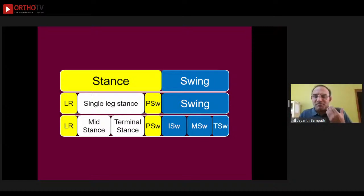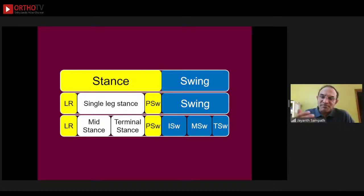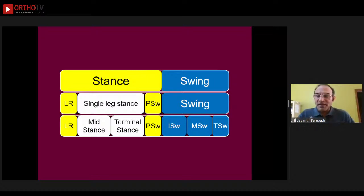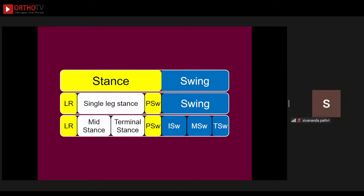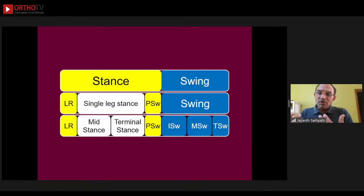When the swinging limb starts behind, it is called the trailing limb — that is initial swing. As it crosses the opposite leg it is mid-swing, and once it crosses the stance phase limb it becomes the leading limb. Swing and stance phase have two different purposes: the purpose of swing phase is to advance the limb so that you can take the next step, while the purpose of stance phase is to advance the body over the planted limb.